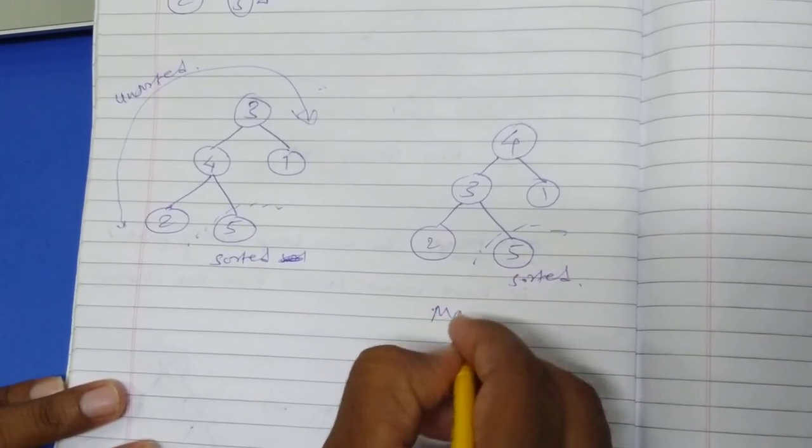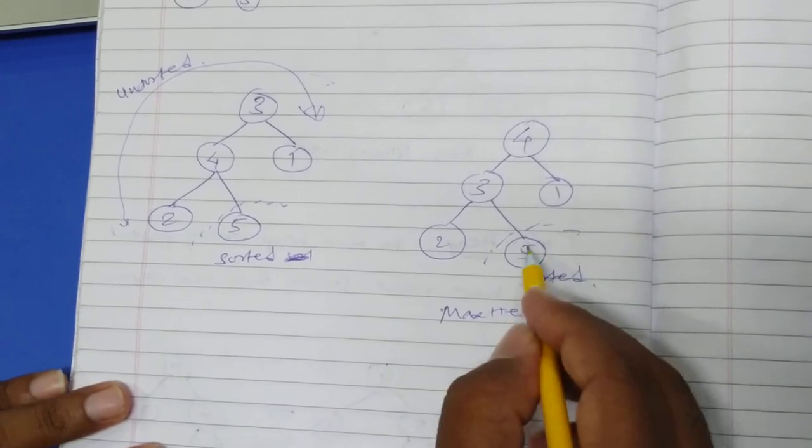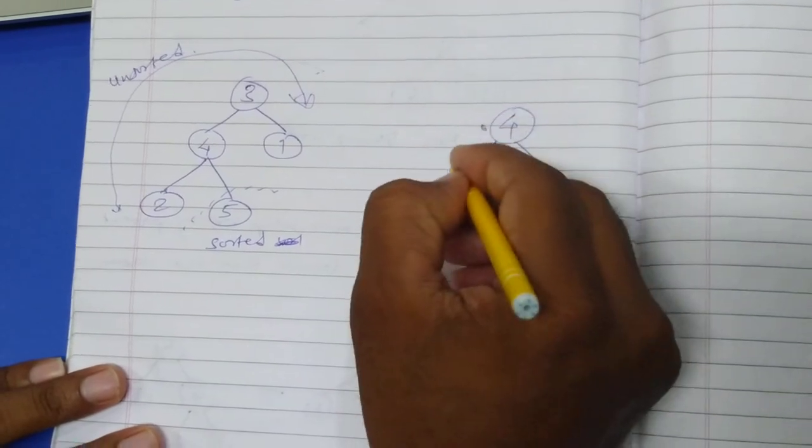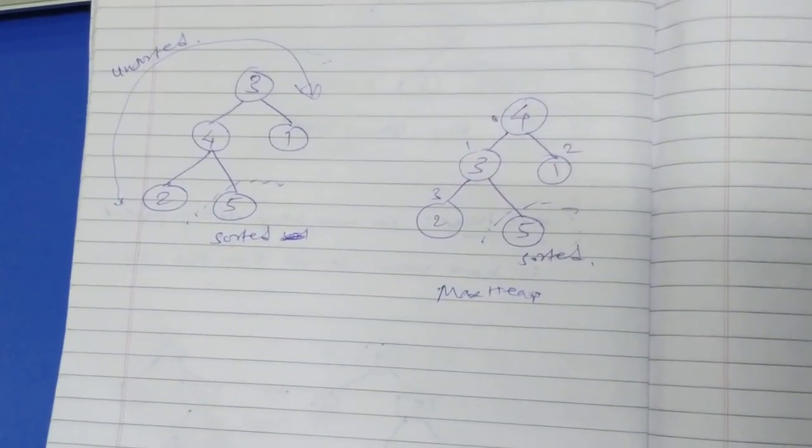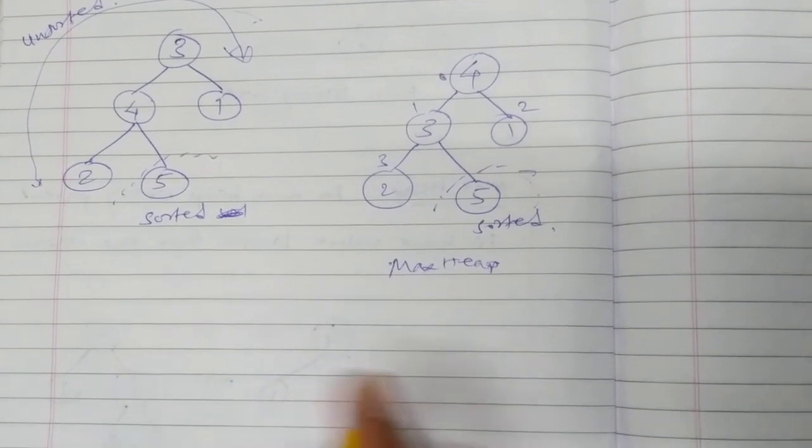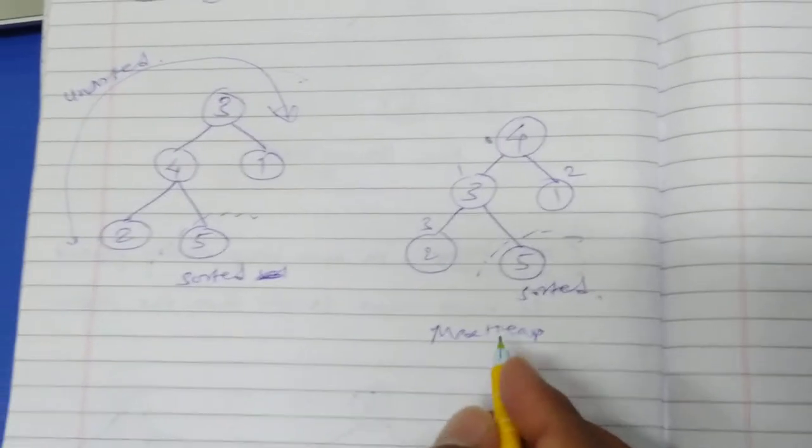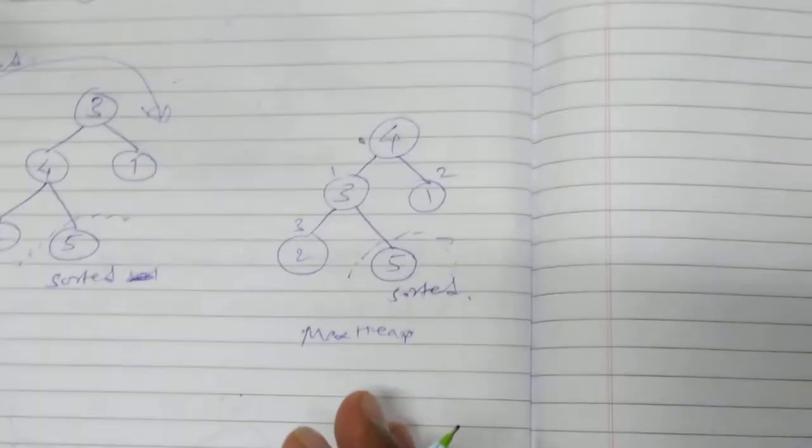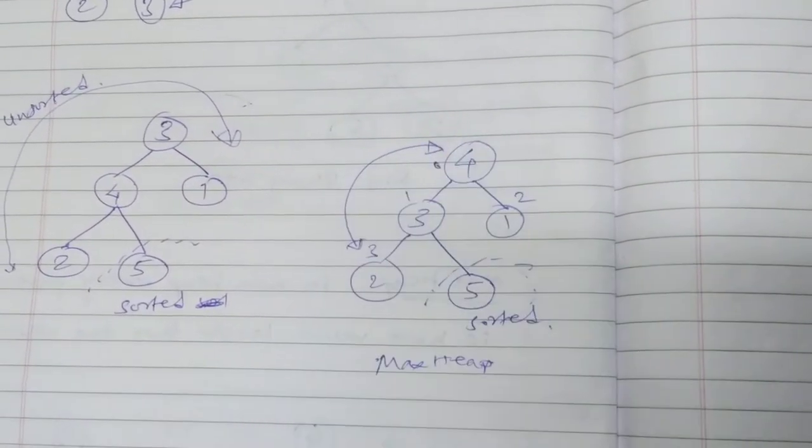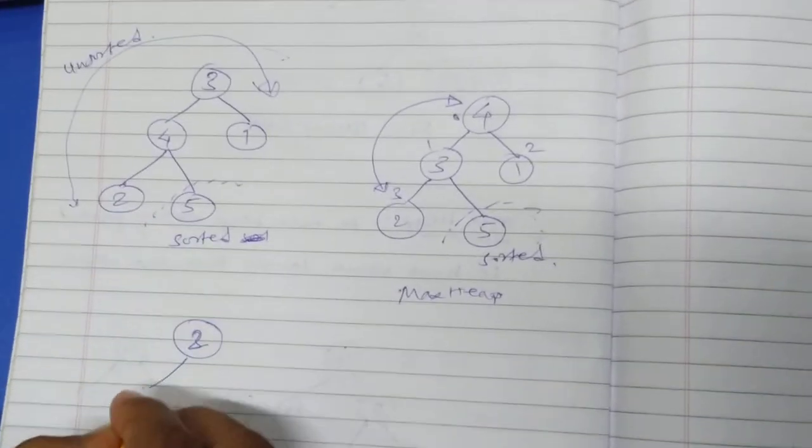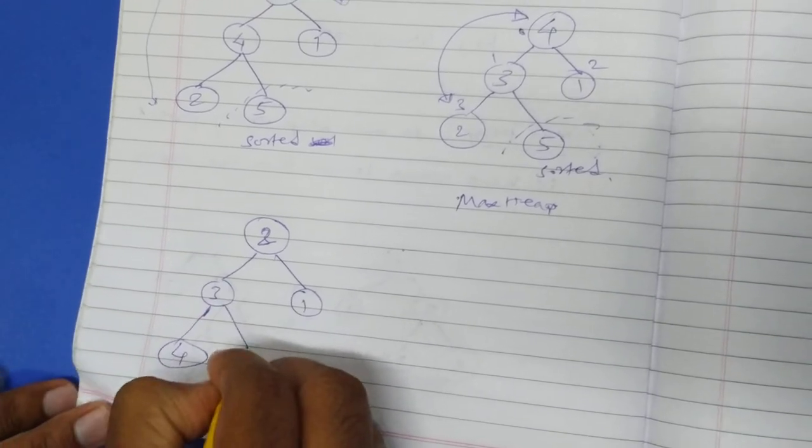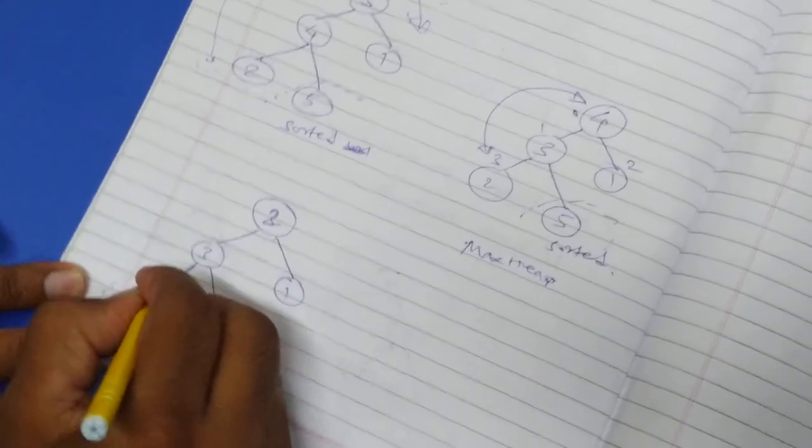To do that, 4 will go to the root node, 3 come down, 1, 2 and 5, but we'll ignore it because this is sorted. Is it a MaxHeap? Yes. By ignoring this, another part is maximum. Again give the indices, the same thing: zero, one, two, three.